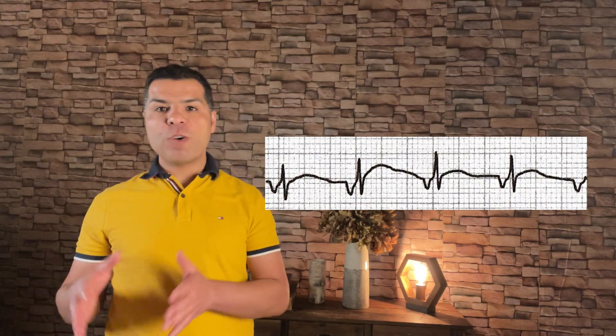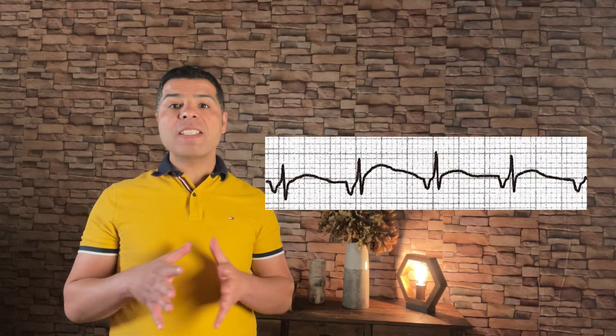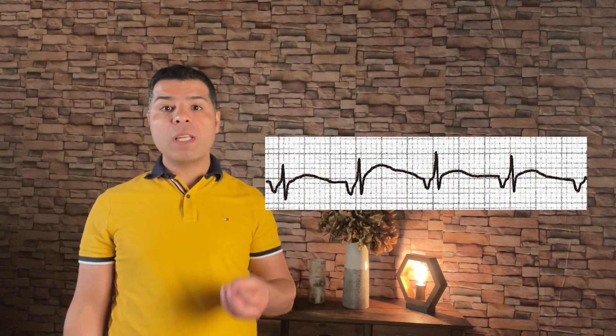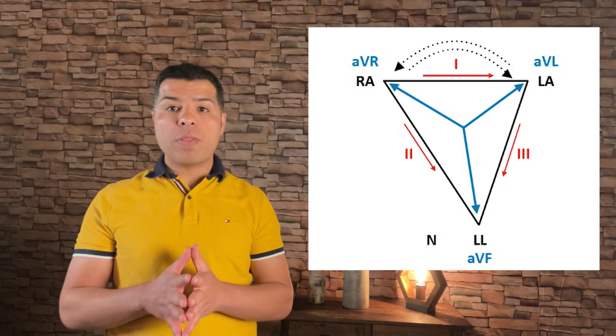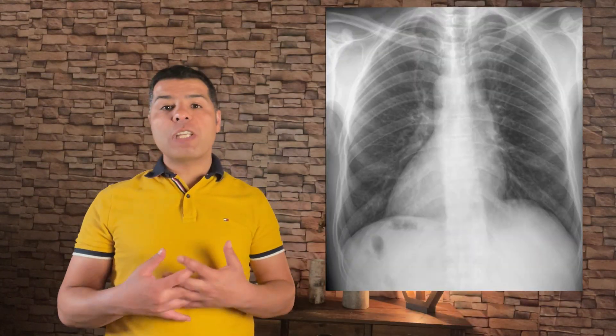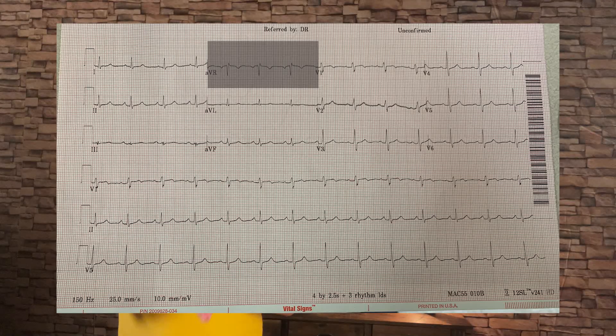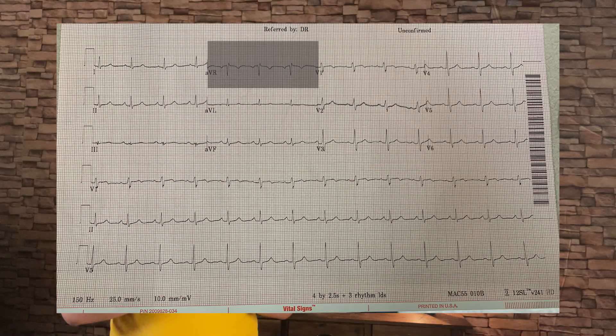Having a negative P wave in lead 2 does not always indicate a low atrial focus or AV nodal rhythm. Every time I see a negative P wave in lead 2, I immediately check lead 1 and aVR. If all waves — P, QRS, and T — are negative in lead 1 and positive in aVR, we are dealing with lead misplacement or dextrocardia. In a normal EKG, all waves should be negative in aVR.